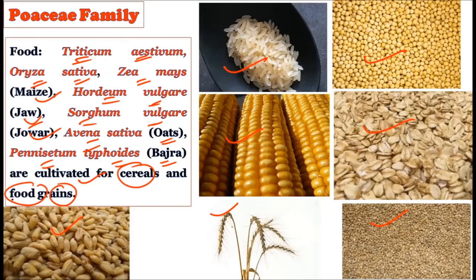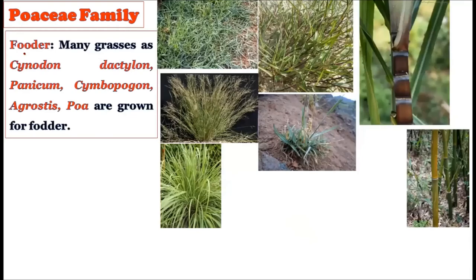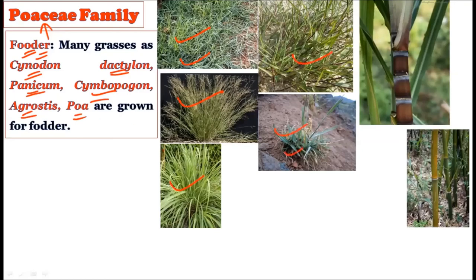The staple food grains of the world's population are derived from rice (Oryza sativa) and wheat (Triticum aestivum), cultivated from time immemorial. Other important cultivated cereals include Zea mays (maize/corn), Hordeum vulgare (barley/jau), Sorghum vulgare (jowar), Avena sativa (oats), and Pennisetum typhoides (bajra). All these important agricultural crops belong to the Poaceae family.